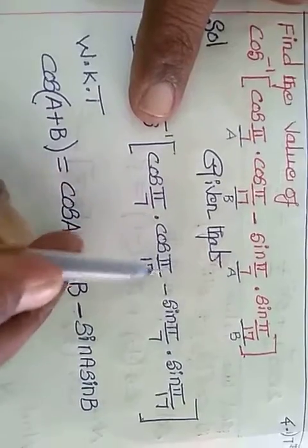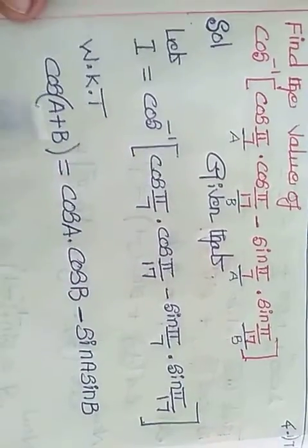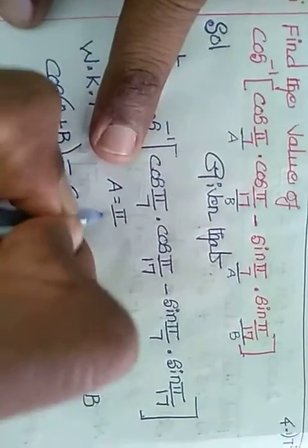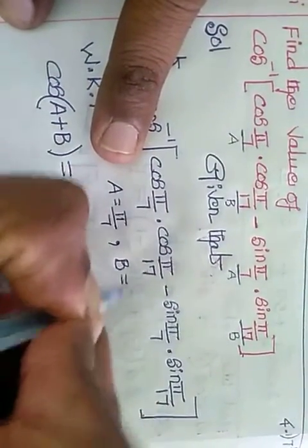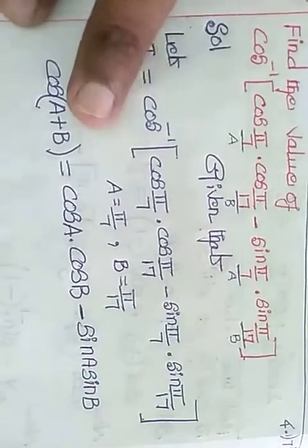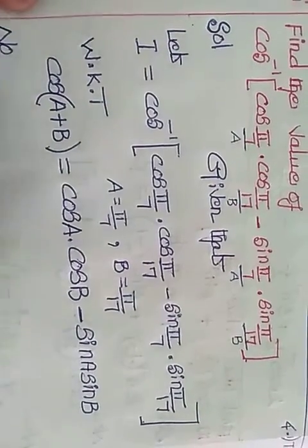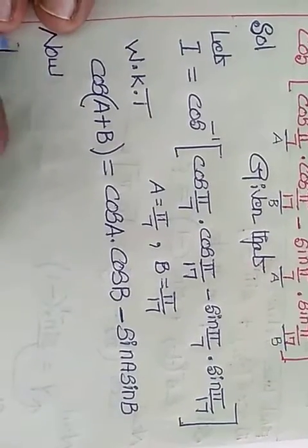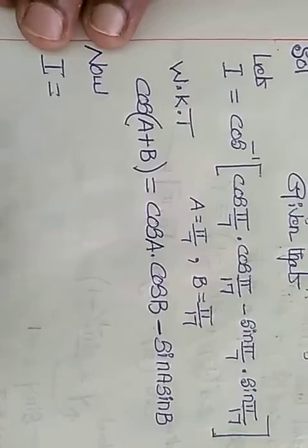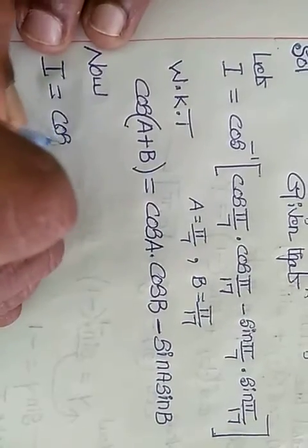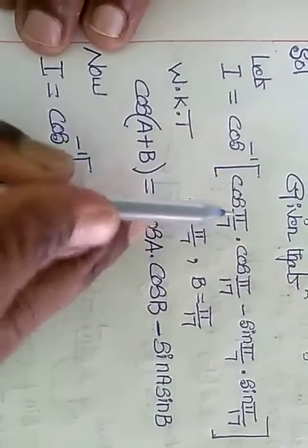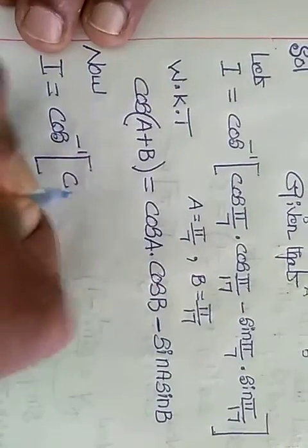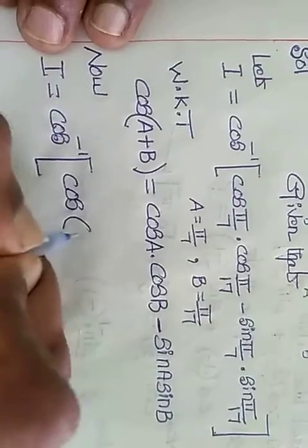So this is cos a cos b minus sine a sine b, which equals cos a plus b. So a is pi by 7 and b is equal to pi by 17. Because we get the value of cos a plus b.